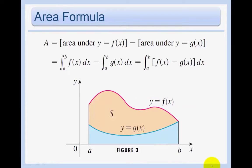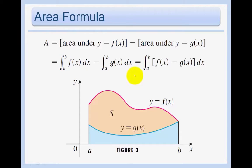The area is formalized as the area under the f of x curve minus the area under the g of x curve, leaving us with S, the area we're trying to find. You can say the area under f of x minus the area under g of x, or since we have the same bounds on both integrals, we can just put it all under one integral.